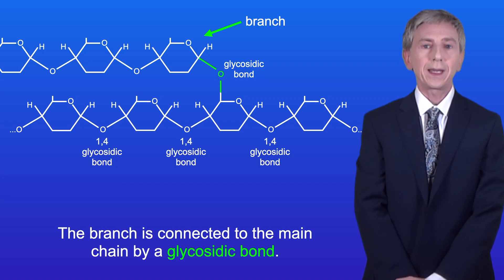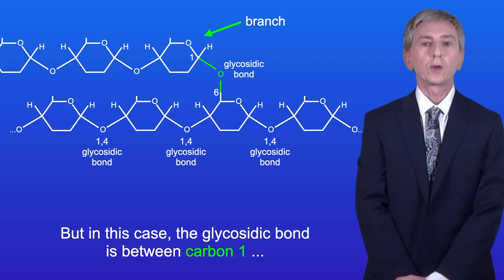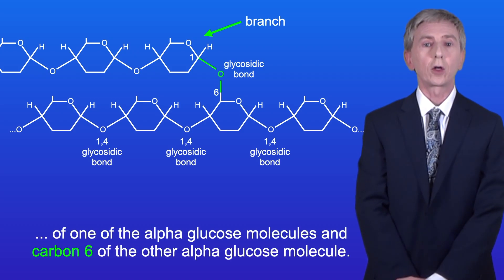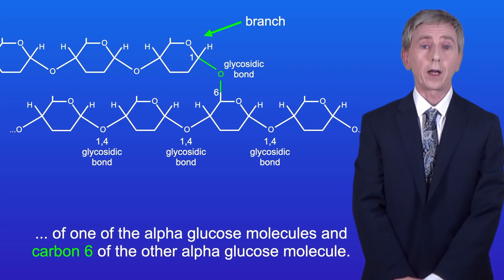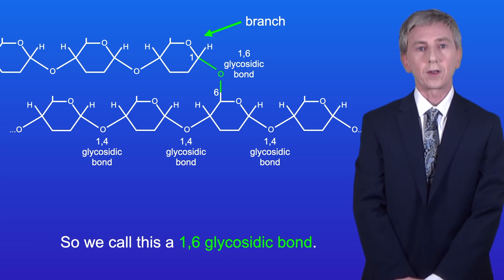The branch is connected to the main chain by a glycosidic bond, but in this case the glycosidic bond is between carbon 1 of one of the alpha glucose molecules, and carbon 6 of the other alpha glucose molecule. So we call this a 1,6 glycosidic bond.